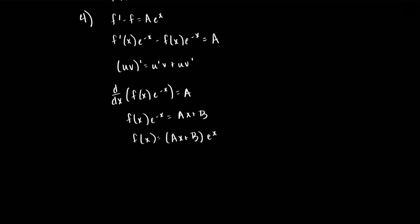And if you remember from earlier that f of 0 is equal to 0, this implies that b times e to the 0 equals b, which is equal to 0. Finally, we have f of x is equal to a times x times e to the x.